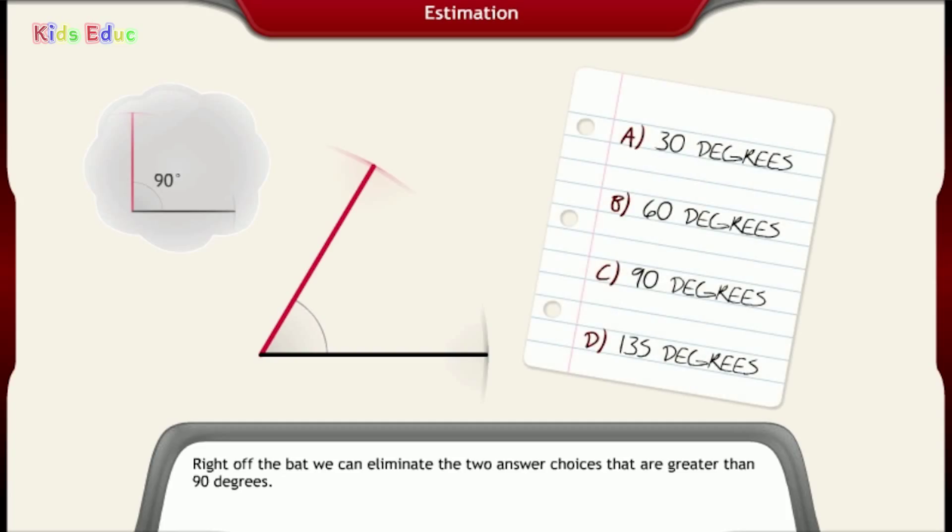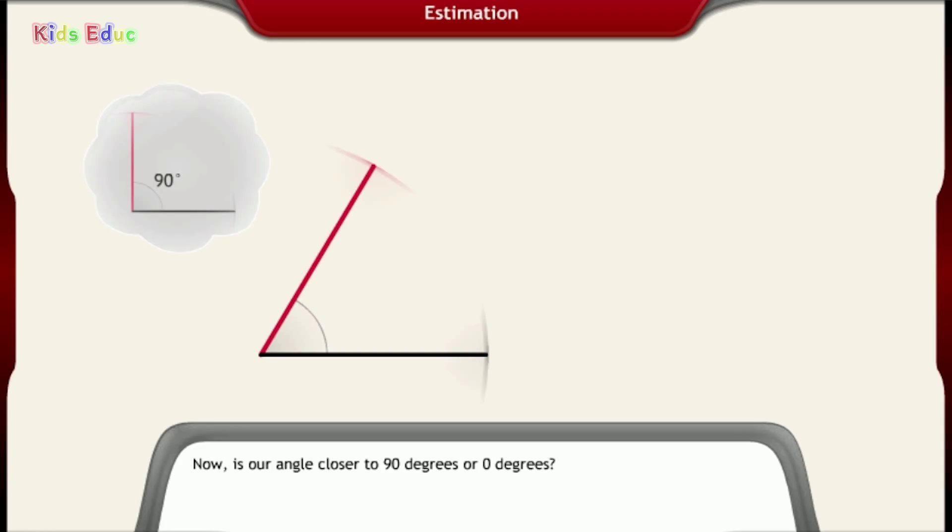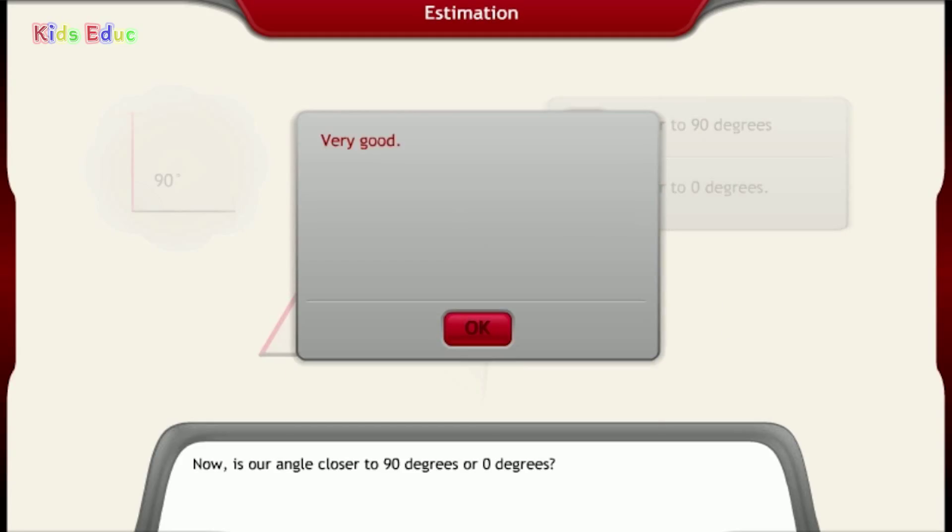Right off the bat, we can eliminate the two answer choices that are greater than 90 degrees. Now, is our angle closer to 90 degrees or 0 degrees? Closer to 90 degrees. Very good.